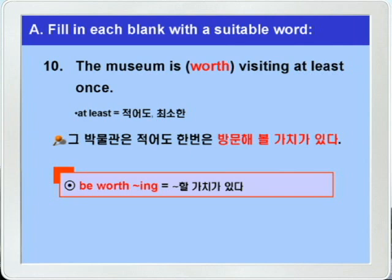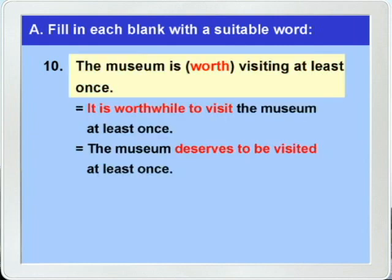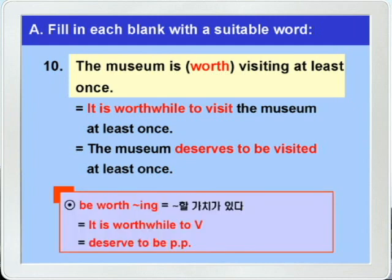정답 worth를 넣어서 다시 한 번 더 들어보고 'be worth -ing' 구문은 다른 표현들로 바꿀 수 있었죠. 'The museum is worth visiting at least once.' 'It is worthwhile to visit the museum at least once.' 'The museum deserves to be visited at least once.' 이처럼 'be worth -ing'는 'it is worthwhile to 부정사' 그리고 'deserve to be pp' 이런 구문으로 바꿀 수가 있는 것입니다.